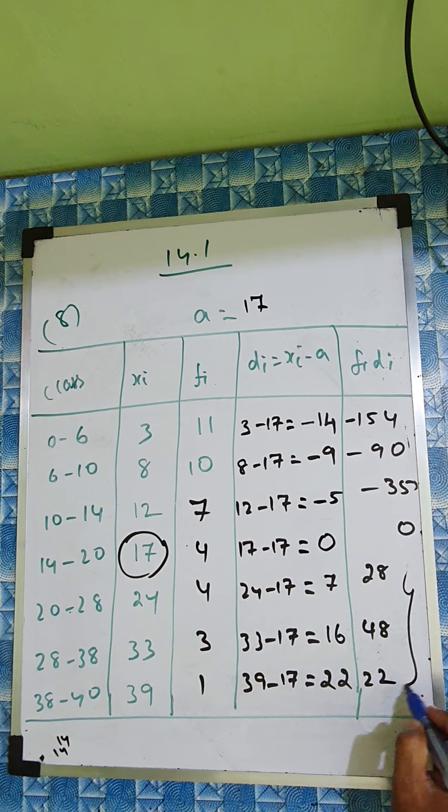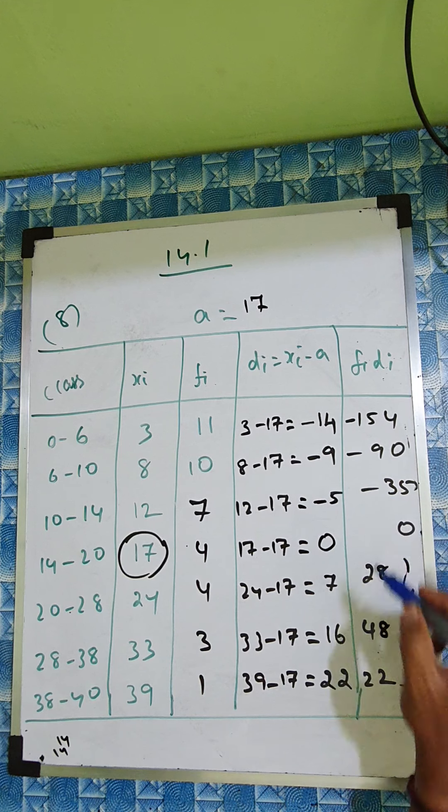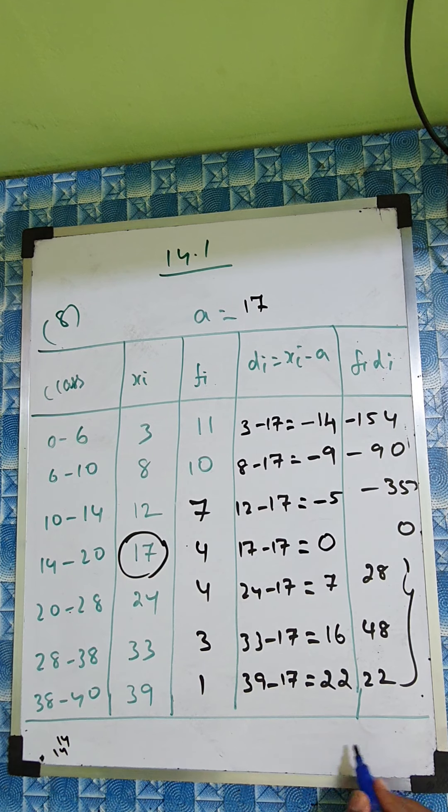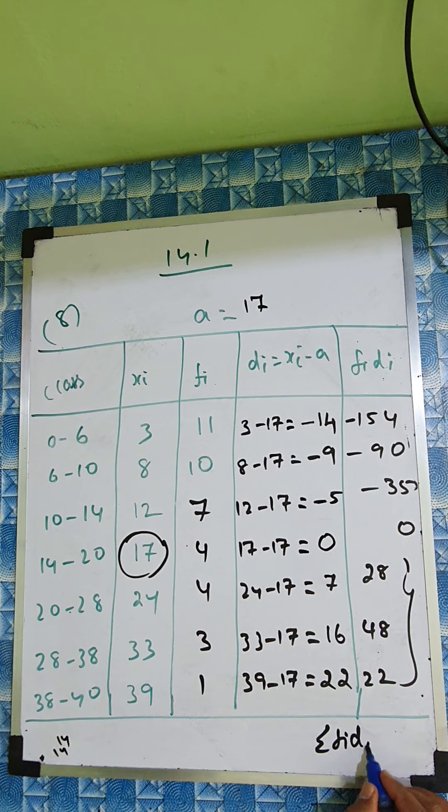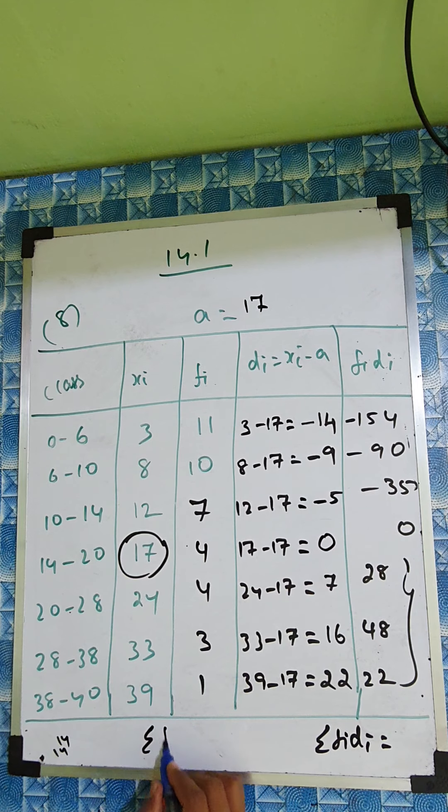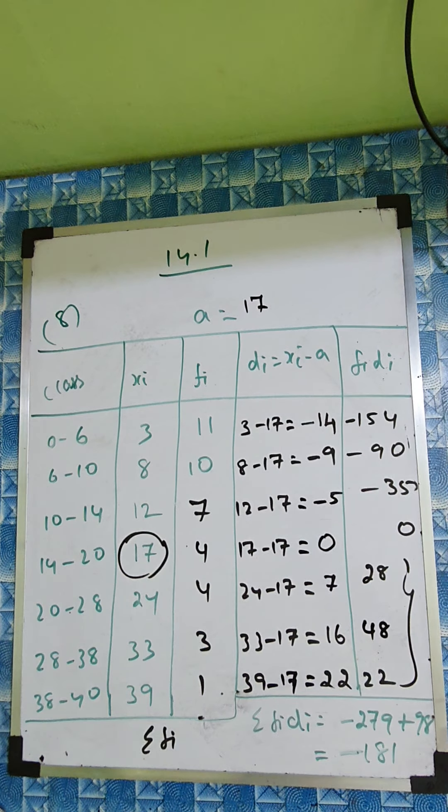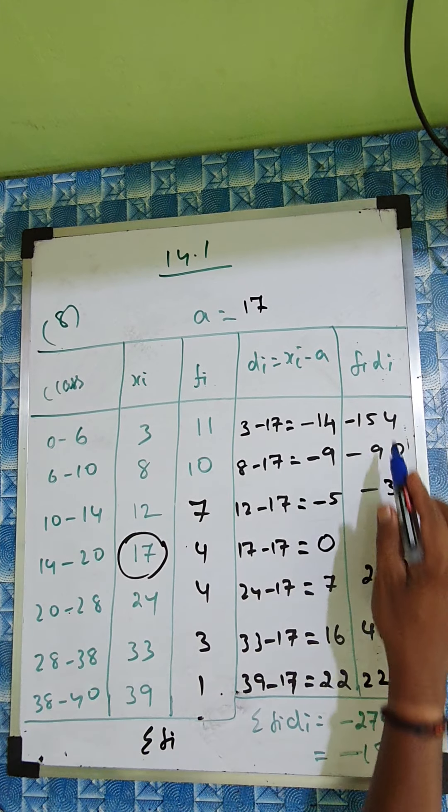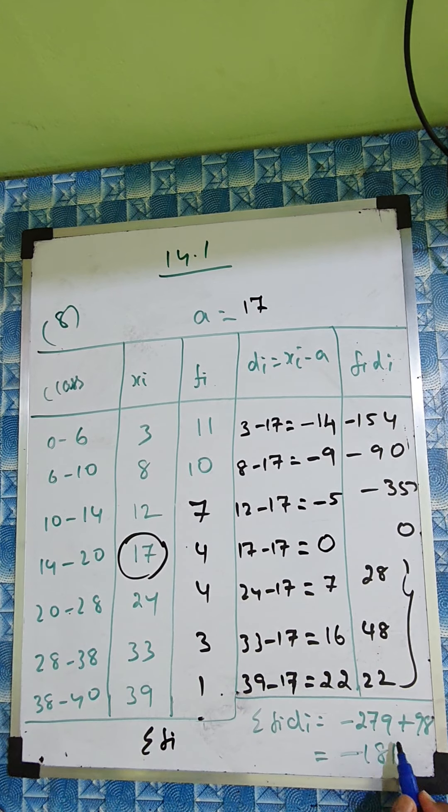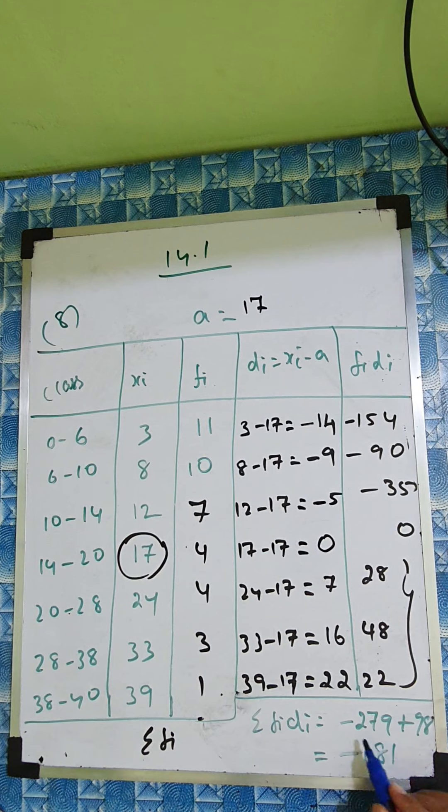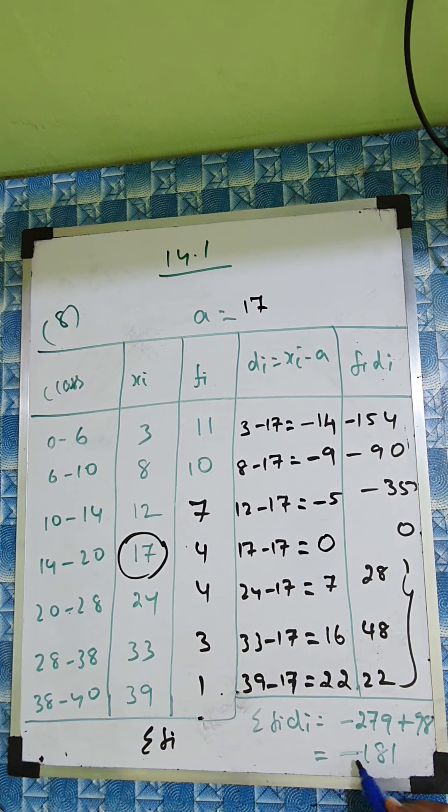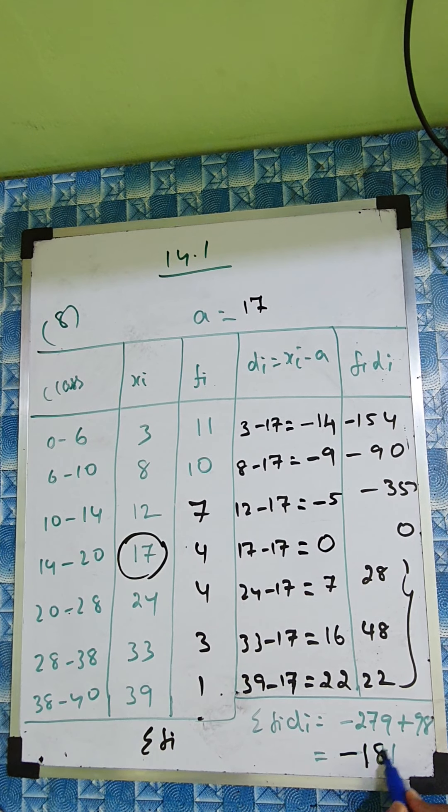Now add these three numbers and add these three numbers and we'll subtract. And which is a big number, we'll put the symbol. So sigma fi di is here. If you're adding these three, it's minus 279. And if you add this number, 98. And you subtract, it will come minus 181.